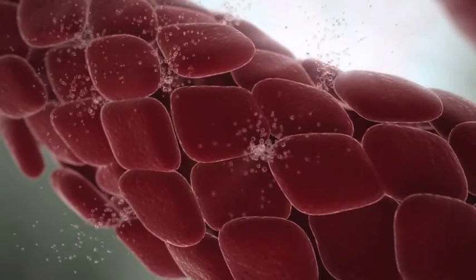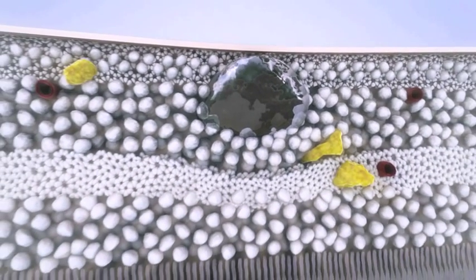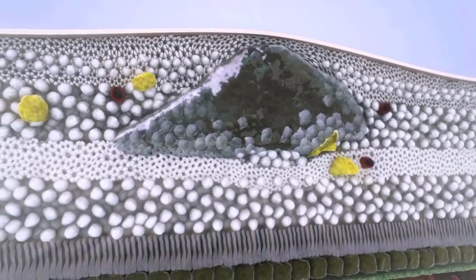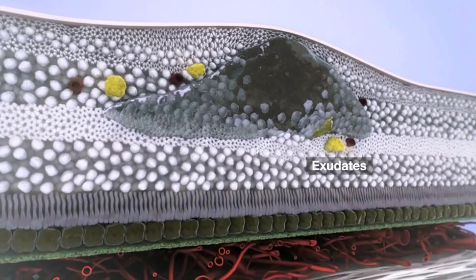As the junctions loosen, the intravascular fluid leaks out into the surrounding tissues of the retina. Increased vascular permeability promotes the formation of macular edema and the deposits of hard exudates, both of which disrupt the morphology of the retina and may lead to visual impairment.